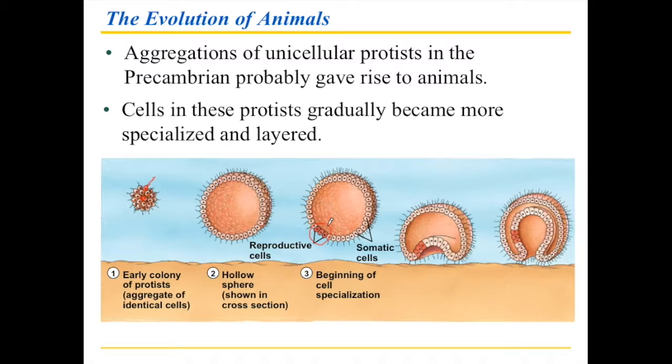Now what do you do when you have a specialized set of cells? You need to make sure that if they serve your entire organism, those cells are in a safe place. And so one of the things that cell clusters probably did at that time is they began to fold inward. There are lots of good reasons for folding inward — some of these we've already encountered with endosymbiosis. Folding inward means you increase the surface area where things can happen, it gives a certain amount of protection, and those specialized cells can also become protected.